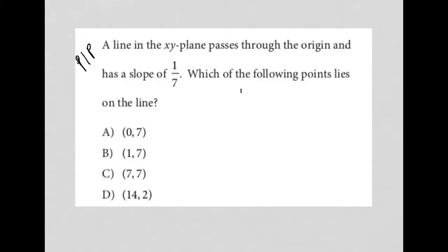So what do I know? I know that I have a graph, so I have an X and Y coordinate. And I know that the line passes through the origin, so I have a line there. And the slope is 1 over 7, so slope is, just for a reminder, rise over run.